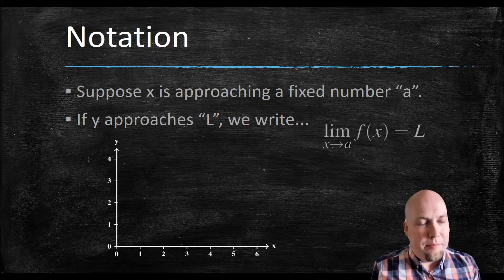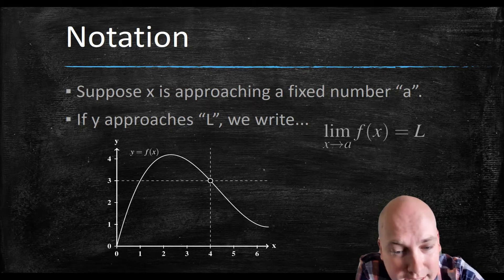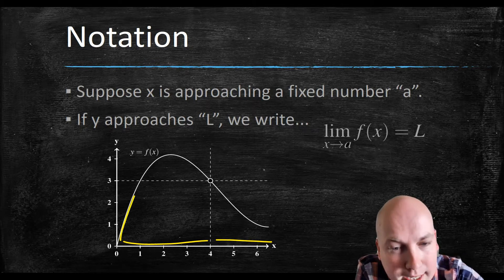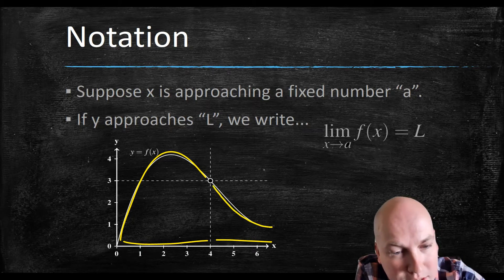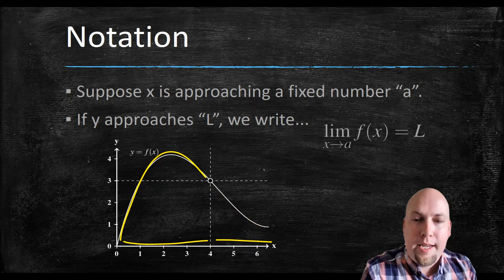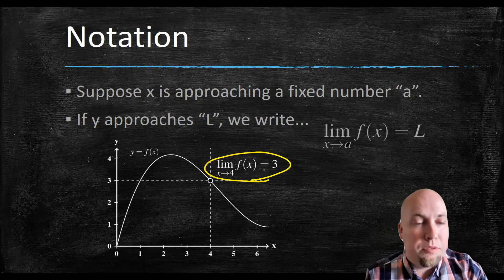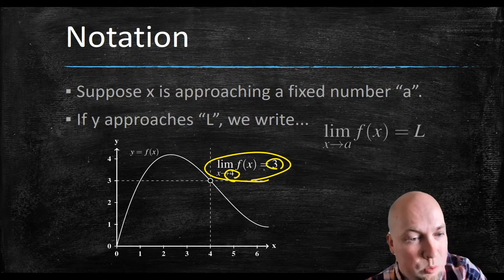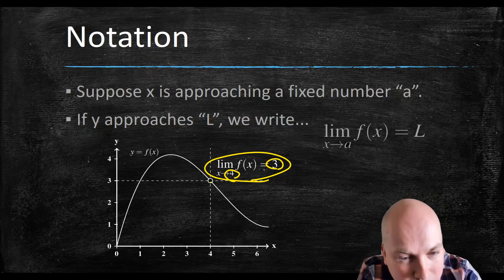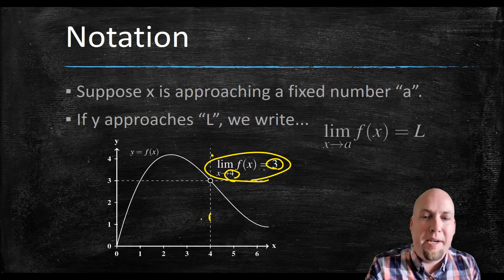To draw a nicer picture: if we have a function like this, as the x value approaches 4 from the left and from the right, notice what's happening to the y value. Imagine walking along the graph of this function — what's happening to your y value as you walk towards x equals 4? The y value is getting closer and closer to y equals 3. So in that situation, we say the limit as x goes to 4 of f(x) equals 3. We do not care what's happening at that particular x value — whether the hole is filled in, jumps up, or jumps down below.